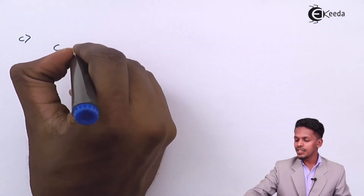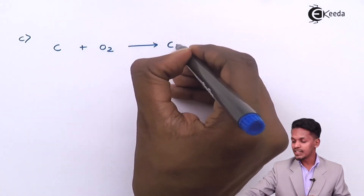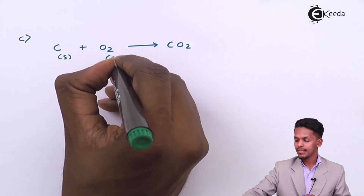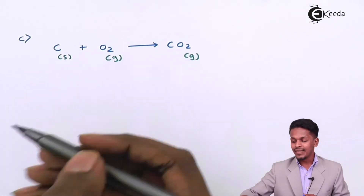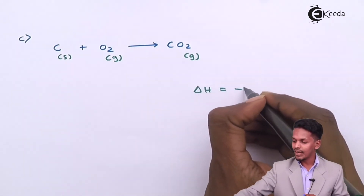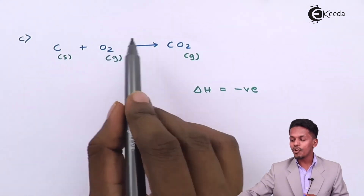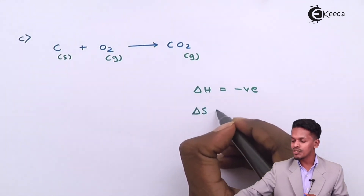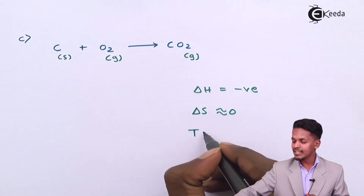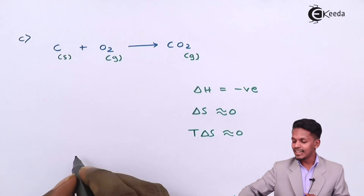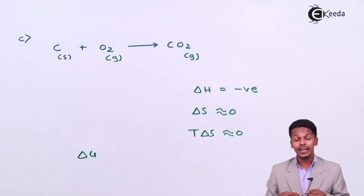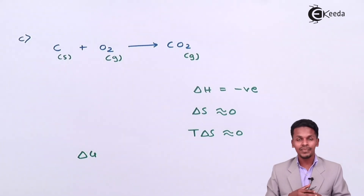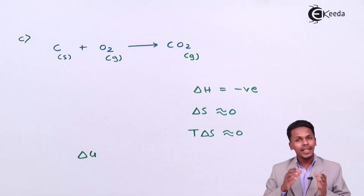The third condition: when carbon reacts with oxygen to form carbon dioxide — C(s) + O₂(g) → CO₂(g). Carbon is solid, oxygen is gaseous, and carbon dioxide is gaseous. This is also a combustion reaction so delta H is negative. However, the number of moles of gaseous product equals the number of moles of gaseous reactant, so delta S is approximately zero. Therefore T·delta S is also approximately zero, meaning delta G does not change significantly with temperature. These are the three conditions from thermodynamic study.